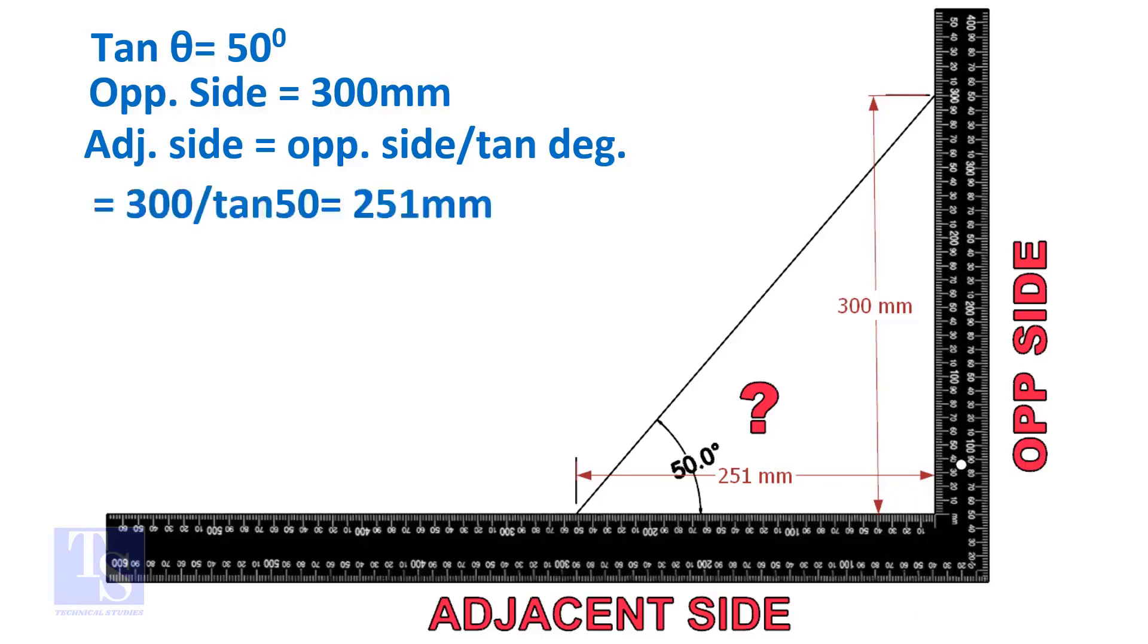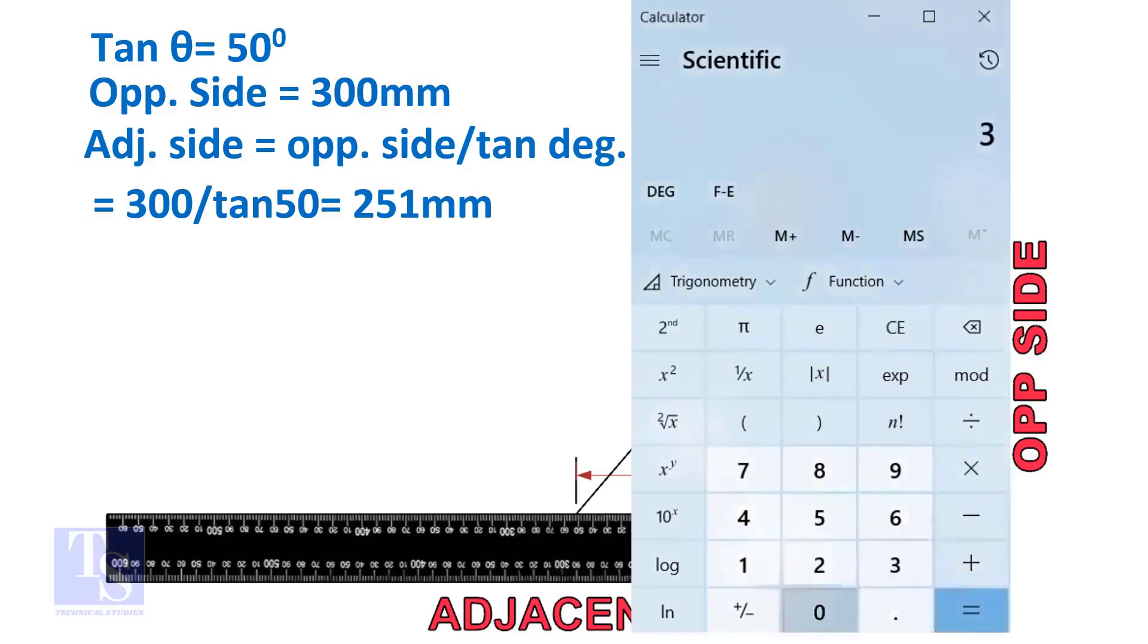Adjacent side is equal to 300 divided by TAN 50 degree. Let us calculate.